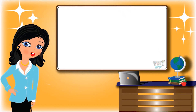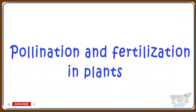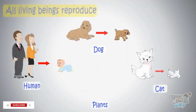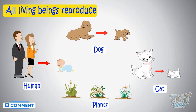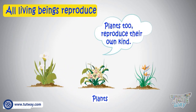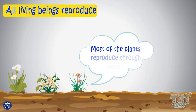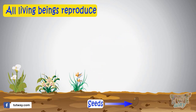Hi kids, today we will learn about pollination and fertilization in plants. We learned that all living beings reproduce — that is, all living things give birth to the same kind. Similarly, plants also reproduce their own kind, and most plants reproduce through seeds. They produce seeds which, when germinated, produce a new plant.